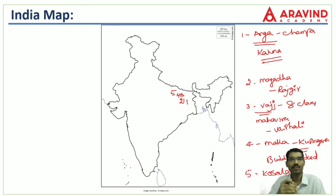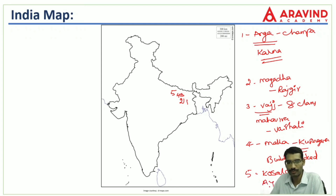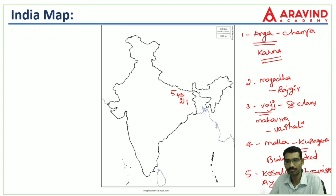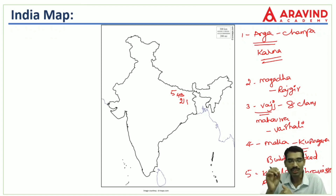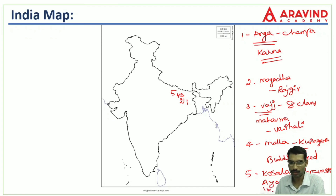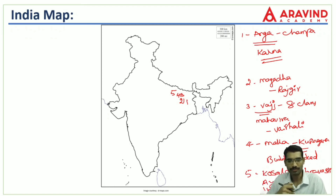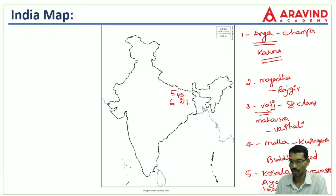Next is Kosala. In the Ramayana, Lord Rama belongs to this Kosala Mahajanapada — the city of Ayodhya is located within it. However, Ayodhya was not the capital of Kosala; the capital was Shravasti. Kosala is also important because Buddha gave more sermons in Kosala than anywhere else, and so Buddha was also called 'the Kosala Buddha' — the Buddha who belongs to Kosala.